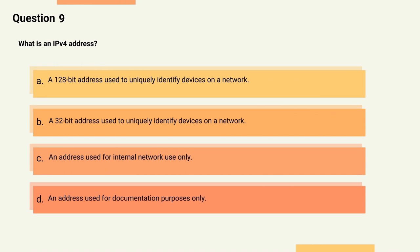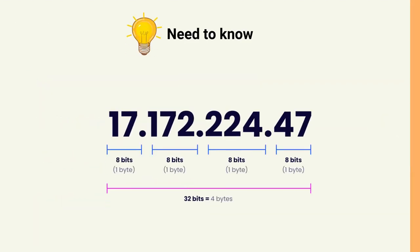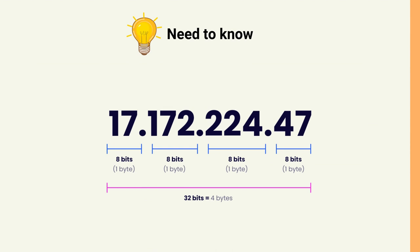Question 9: What is an IPv4 address? Options: A) A 128-bit address used to uniquely identify devices on a network, B) A 32-bit address used to uniquely identify devices on a network, C) An address used for internal network use only, D) An address used for documentation purposes only. The correct answer is Option B. Explanation: IPv4 addresses are 32-bit addresses used to uniquely identify devices on a network.